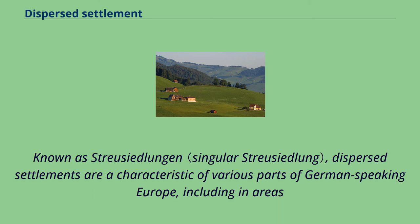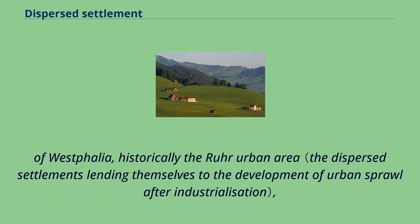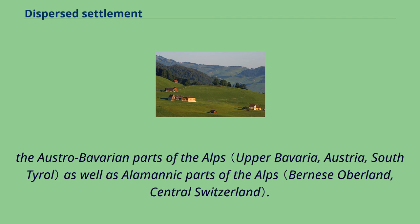Known as Streusiedlungen, dispersed settlements are a characteristic of various parts of German-speaking Europe, including areas of Westphalia, historically the rural urban area, the Austro-Bavarian parts of the Alps, as well as Alemannic parts of the Alps.